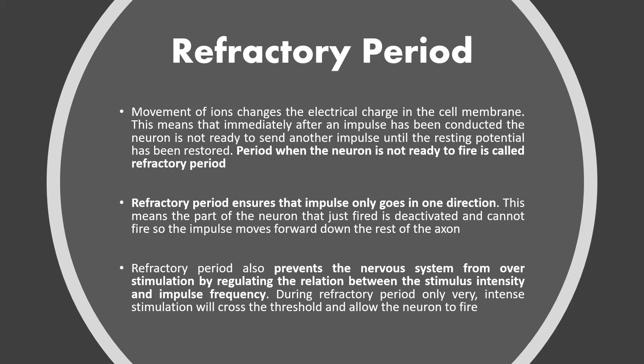Next is the refractory period. The period when a neuron is not ready to fire is called the refractory period. It ensures that the impulse only goes in one direction — the part of the neuron that just fired is deactivated and cannot fire again, so the impulse moves forward down the rest of the axon. The refractory period also prevents the nervous system from over-stimulation by regulating the relationship between stimulus intensity and stimulus frequency. During this period, only intense stimulation will cross the threshold and allow the neuron to fire.